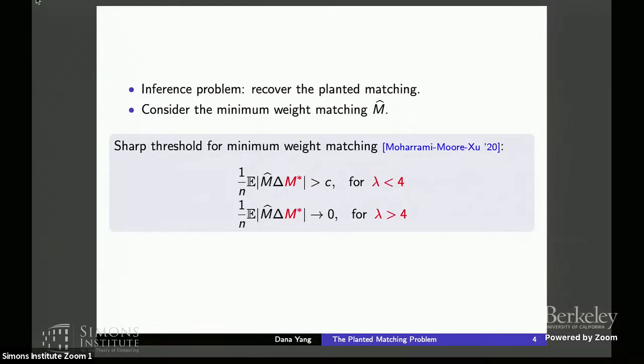And the natural solution is to consider what is the minimum weight matching estimator M hat? How does it perform statistically under this planted model? And this problem was studied earlier by Mohrami, Moore, and Shibi, where they showed that the sharp statistical limit happens at lambda equals 4 exactly. So that means when lambda is smaller than 4, you have the minimum weight matching has to suffer a constant fraction of edge errors, and when lambda is larger than 4, the error goes to 0.